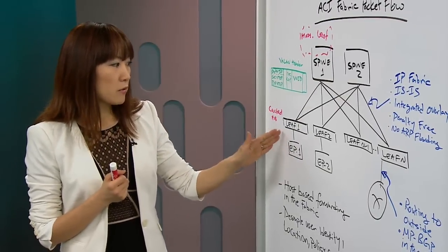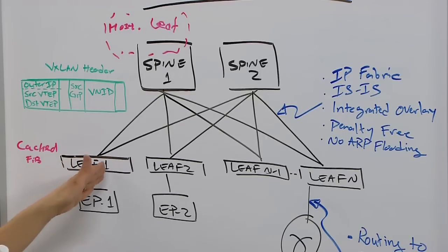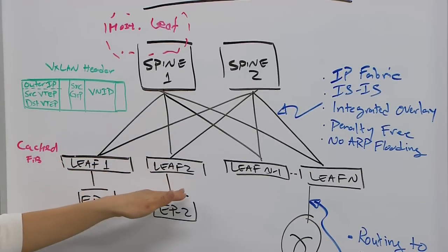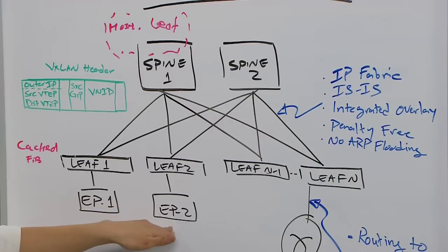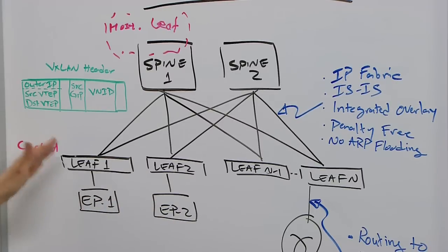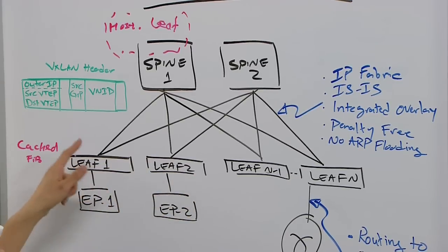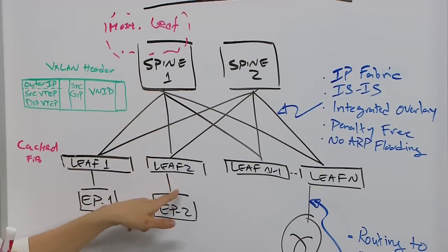When packets come in on the ingress leaf in leaf 1, if leaf 1 has the information about the destination host like EP2 here, then it's going to encapsulate the packets in VXLAN header with the source VTEP of itself, destination VTEP of leaf 2 here, and then forward packets towards leaf 2.